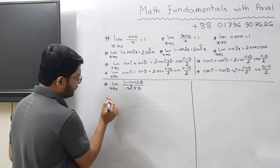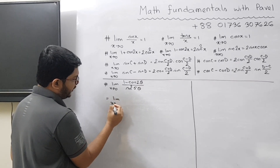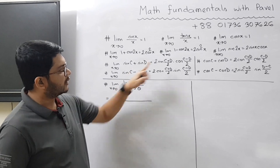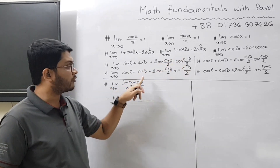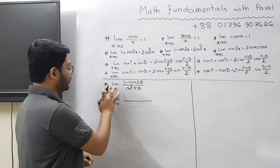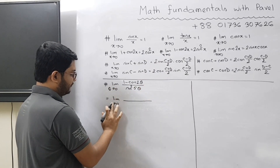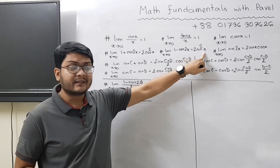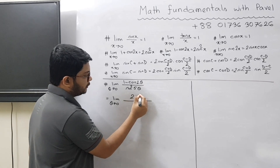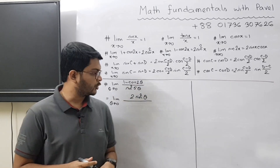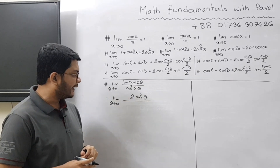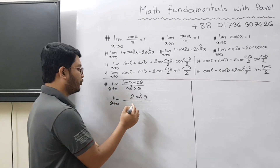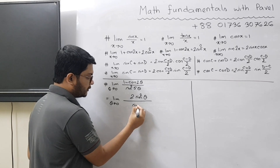In the next line, we apply the formula for 1 minus cos 2 theta. Instead of x we have theta, so theta tends to 0. Using the formula, 1 minus cos 2 theta equals 2 sin square theta. So we can write 2 sin square theta in the numerator, and in the denominator we have sin square 5 theta.